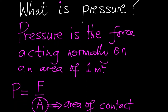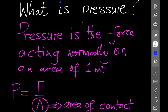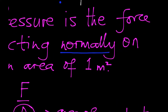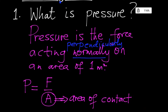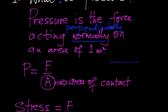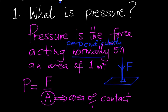The force should be acting normally on an area of one meter squared. The word 'normally' does not mean 'usually' as some people think — when we say acting normally, we mean it is acting perpendicularly. So you are free to say that pressure is the force acting perpendicularly on an area of one meter squared. If this is the surface, the force should be acting perpendicularly — exactly like that. That answers our first question.